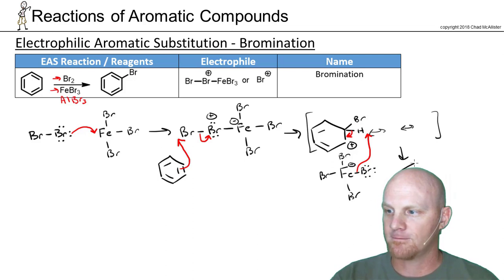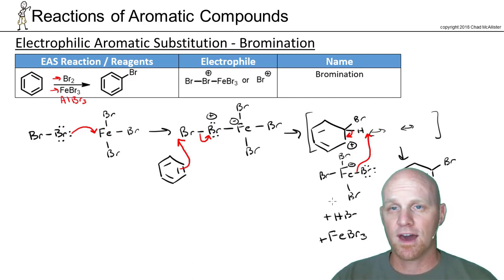Now we've got our benzene ring back. The bromine has completely replaced the hydrogen, and we've also formed some HBr and some FeBr3. The hallmark of a good catalyst is that it does not get consumed in the reaction, and we get our FeBr3 back as we should with any catalyst.